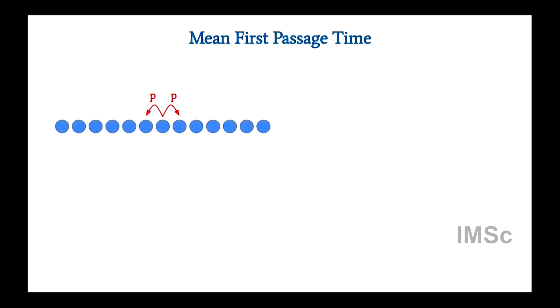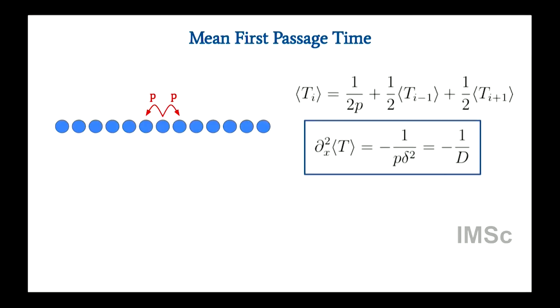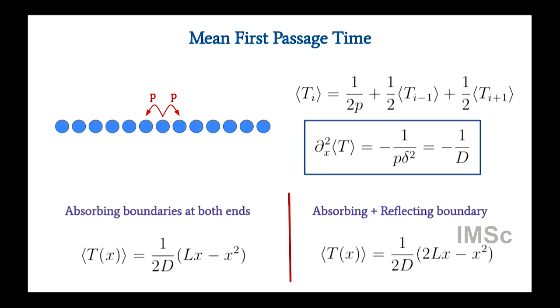I now switch to the language of stochastic processes. I'm looking for first passage times of a random walker diffusing on a one-dimensional backbone as I increase the number of obstacles. For simple diffusion on a 1D lattice, you can take a hop left or right with some rate P. The average time spent at each site is 1/(2P). You write a recursion relation for mean first passage times, take the continuum limit, and get a differential equation. This is a standard textbook problem with absorbing or reflecting boundary conditions.